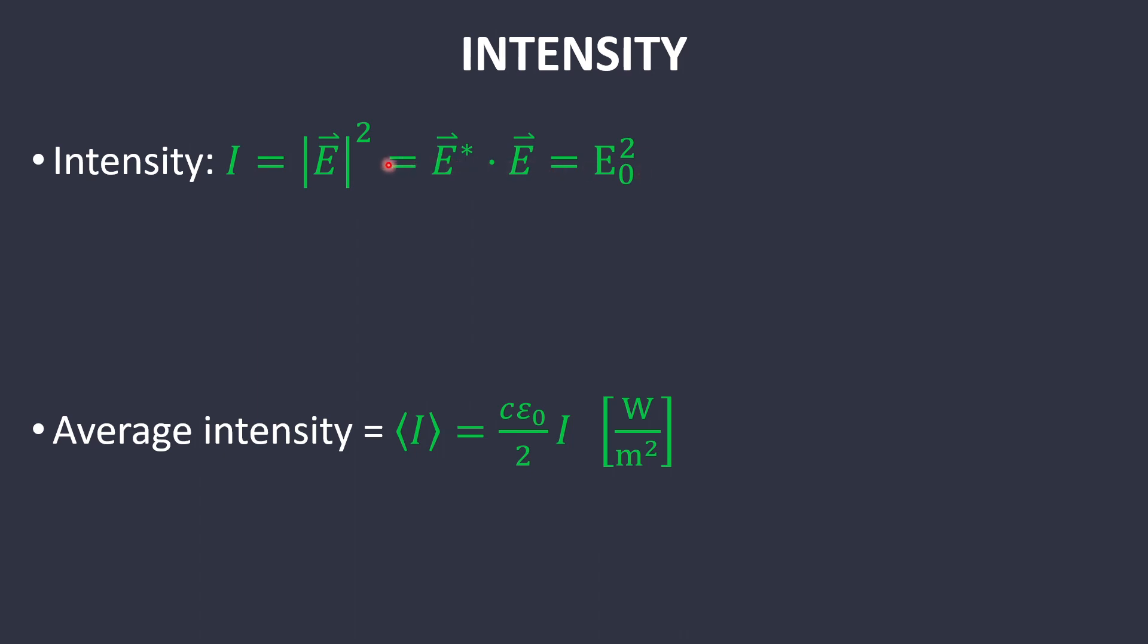The intensity can be defined as the square of the magnitude of the electric field. In many textbooks, including Griffith's electrodynamics textbook, the intensity is actually defined as the average intensity, which is power per area. But in this book, we'll just be covering intensity as the magnitude of the electric field squared.